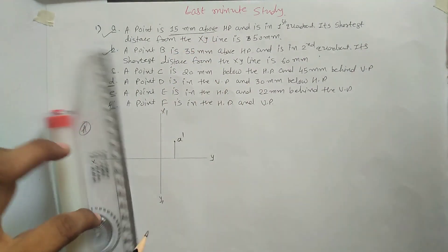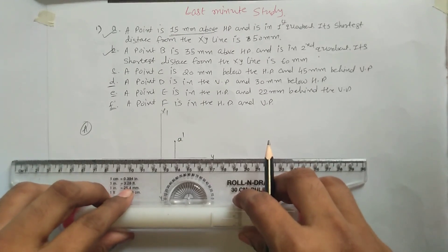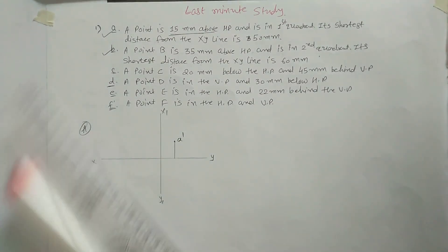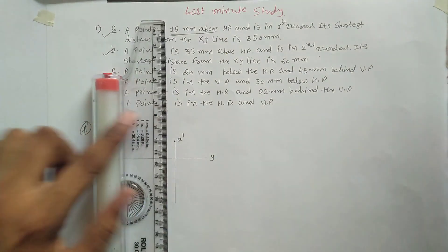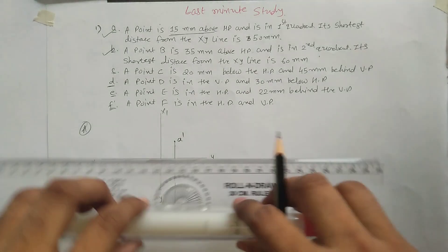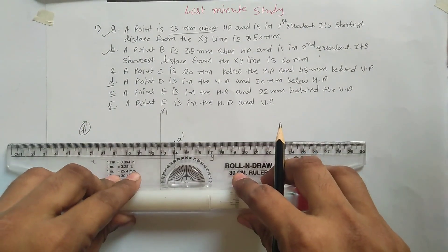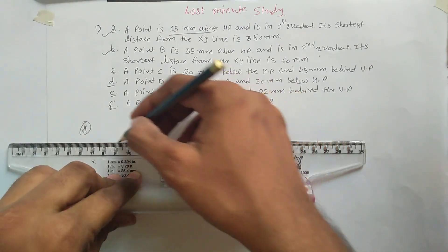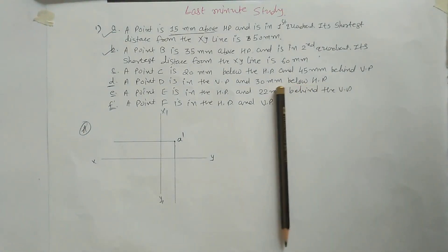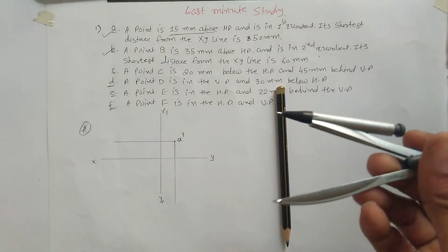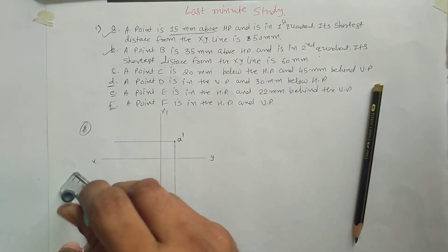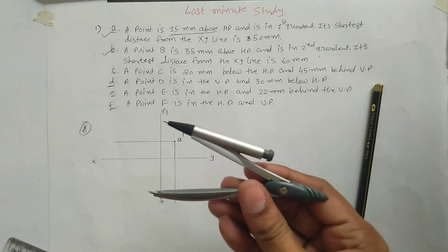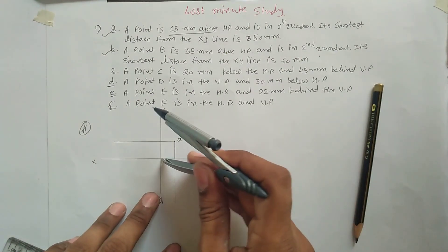This is the X1Y1 line. Then you have to project to find out point A — point A must lie on this same line, but we don't know where yet, so we just draw a projection line. Now draw a projection line from A-dash to find out the distance in the side view. The shortest distance is 50mm as given, so measure this 50mm distance and put a pointer on the intersecting line.